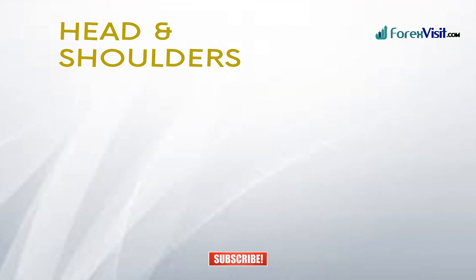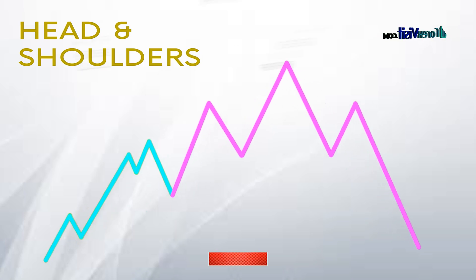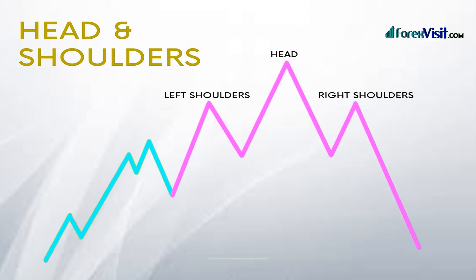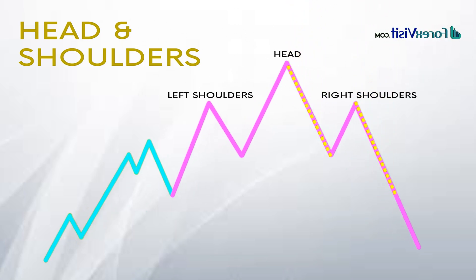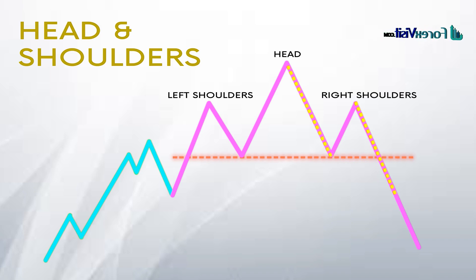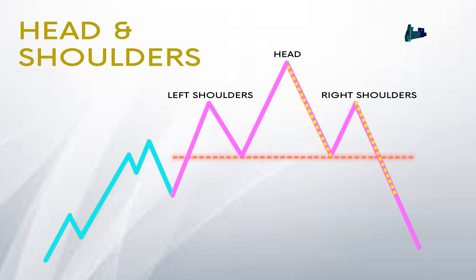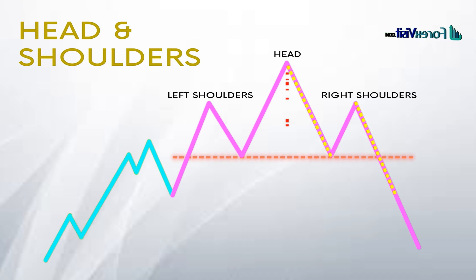Here we can see how that formation looks. We have a left shoulder and a right shoulder. We are going to draw a trend line between the starting and ending points of the shoulders and the head — we call that the neckline. A breakout of the neckline should provide us a minimum of 80% of the distance from the neckline through the end of the head.